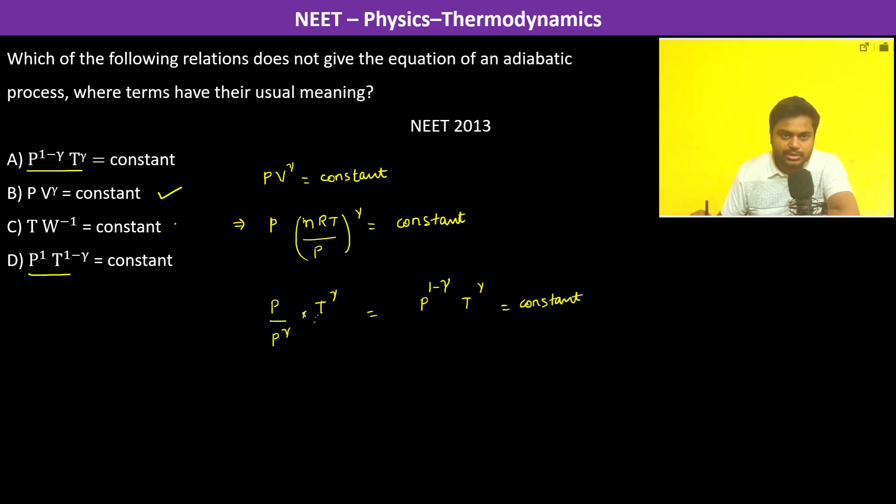Therefore, this relationship is valid but this relationship is not valid, so option D is going to be the correct one.